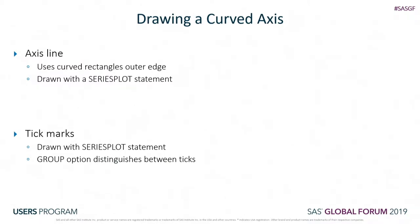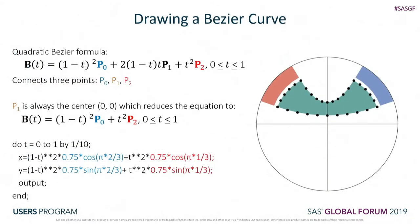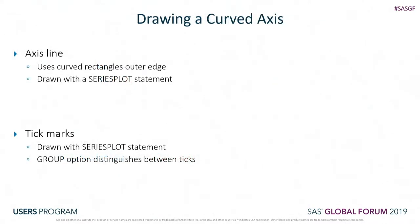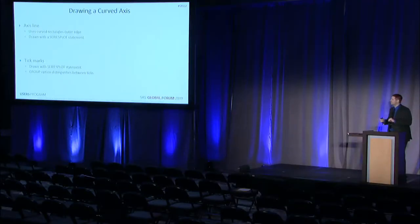Drawing a curved axis is also something SAS doesn't currently have, so I hijacked what I already built. I take the outer edge of the rectangles that make our outer circle and draw a series plot over that edge. For the tick marks I again use series plots—each tick mark needs two points: one touching the unit circle and one extending beyond it. I can control how long they are by specifying what percentage of the unit circle to plot them at, then use the group option to plot an individual series plot for each tick value.